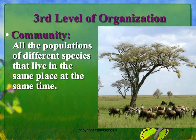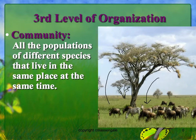The third level of organization is called a community. These are all the populations of different species that live in the same place at the same time. If you can see in this picture, we have a herd of zebra — that's one population — and a herd of wildebeest, that's another population. Two populations living in the same place at the same time is called a community.